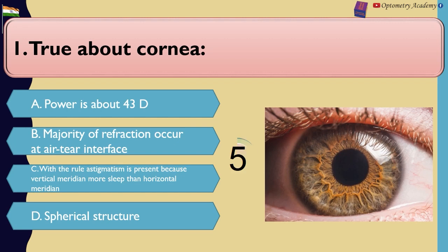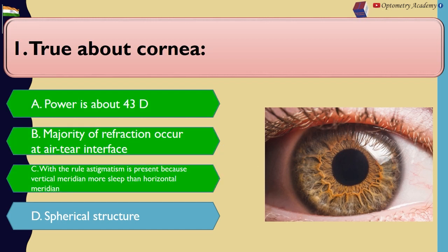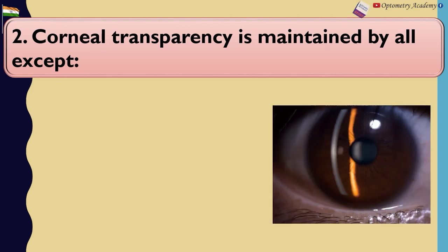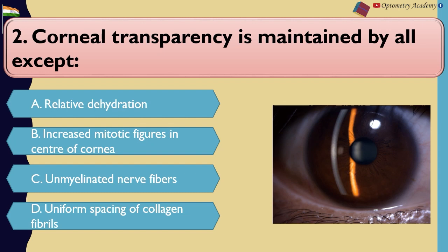Corneal transparency is maintained by all except: A. Relative dehydration. B. Increased mitotic figures in center of cornea. C. Unmyelinated nerve fibers. D. Uniform spacing of collagen fibrils.